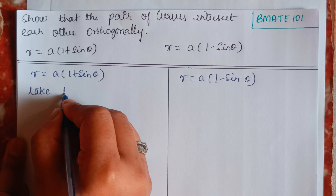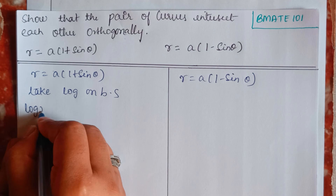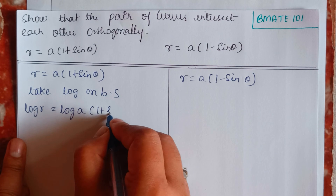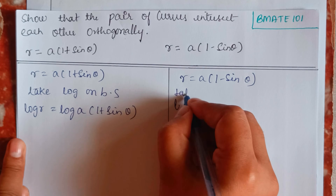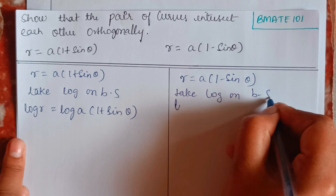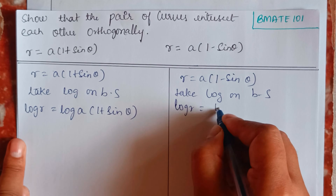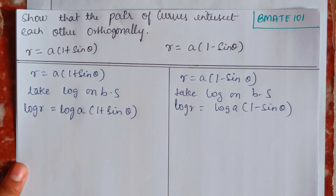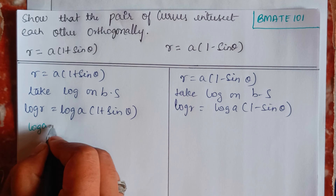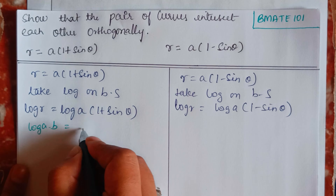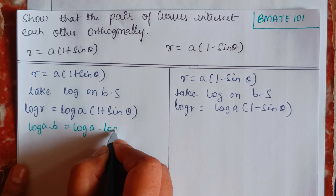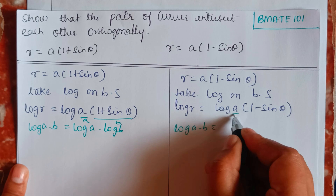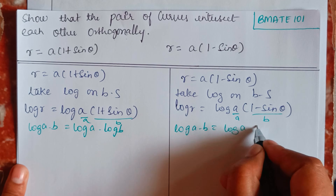The first step is to take log on both sides. For the first curve: log r = log[a(1 + sinθ)]. For the second curve: log r = log[a(1 − sinθ)]. Using the property log(a·b) = log a + log b, this is a and this is b for each.